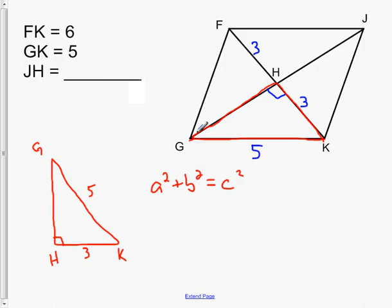So we're figuring out this side right here. And then once we figure that out, that'll give us JH, because these two will be the same. So in this case, we'll say A is 3. B, we don't know, that's this missing side. And then C is the hypotenuse, that's the long one, so that's 5 squared.